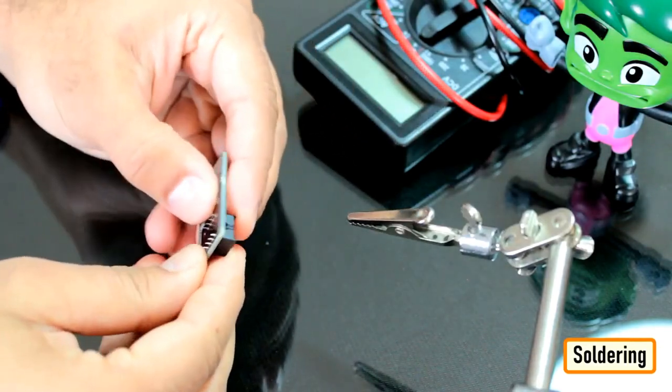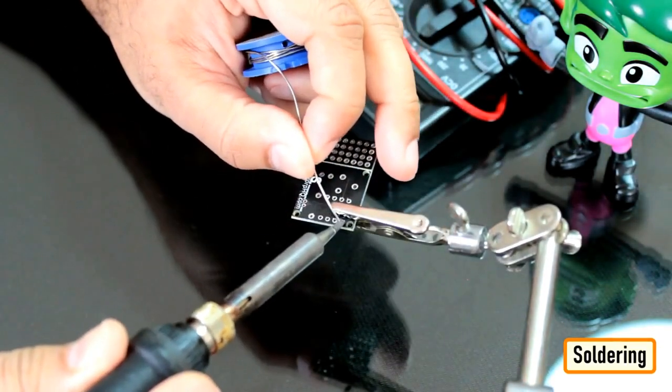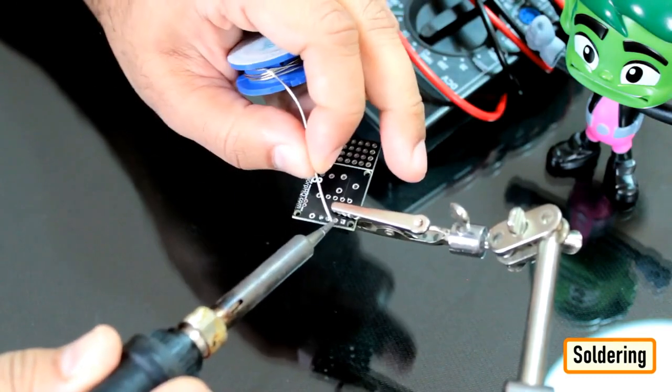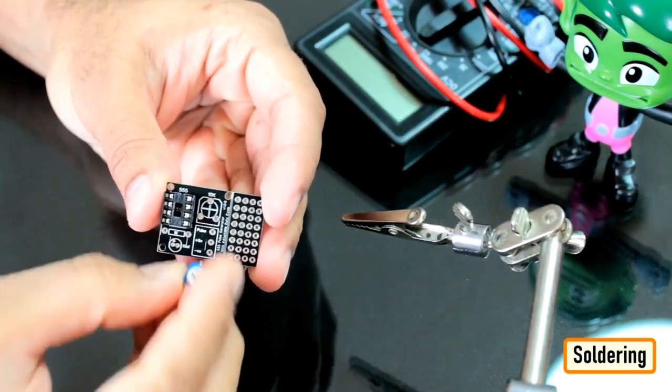Before moving forward, let me quickly show you guys how to assemble the components to this custom made board. Let's start by soldering the IC base to the board.